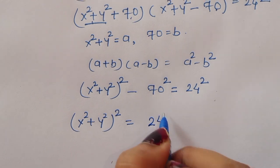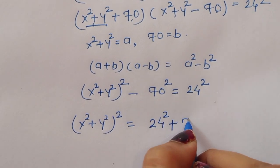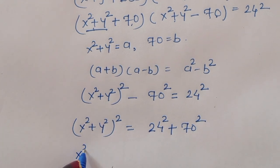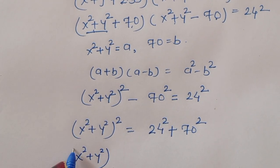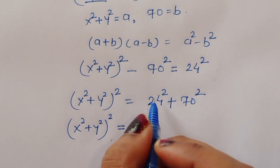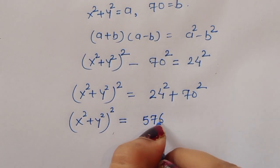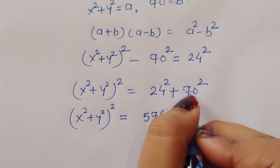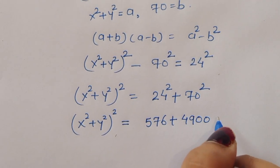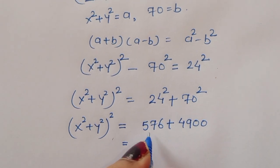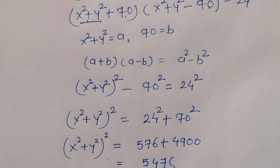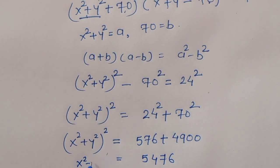So we can write x squared plus y squared, whole squared, is equal to 24 squared plus 70 squared. That is 576 plus 4900, which equals 5476. So x squared plus y squared, whole squared, is equal to 5476.